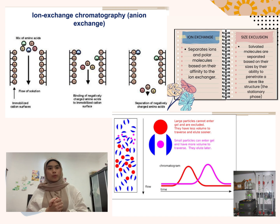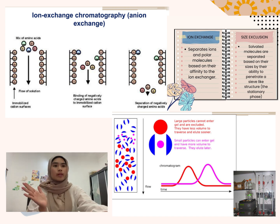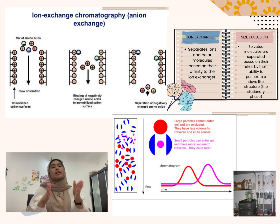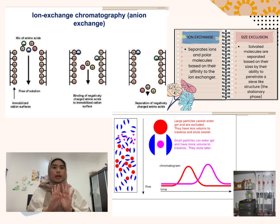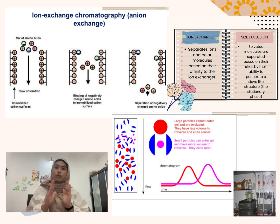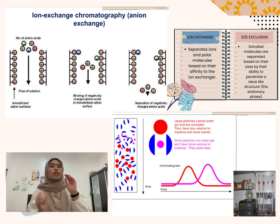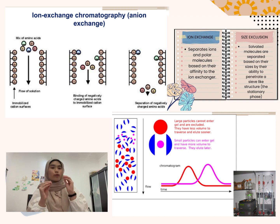For size exclusion, solvated molecules are separated based on their sizes by their ability to penetrate a sieve-like structure, which is the stationary phase. Large particles cannot enter the gel and are excluded — they have less volume to traverse and elute sooner. Meanwhile, small particles can enter the gel and have more volume to traverse, so they elute later.